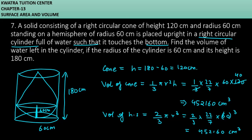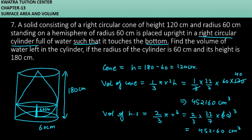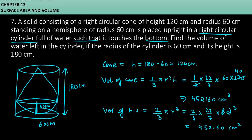Now we find the total. The volume of the cone plus the hemisphere is 452,160 + 452,160 = 904,320 cm³.